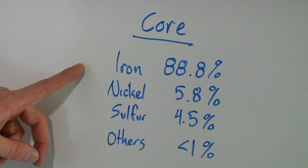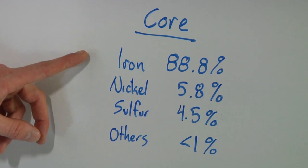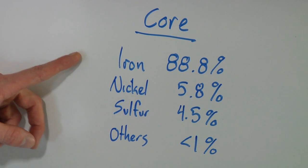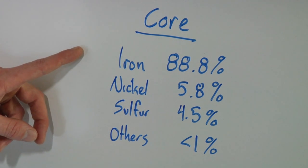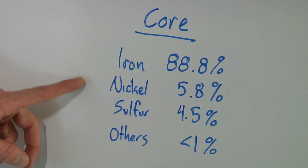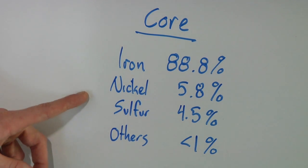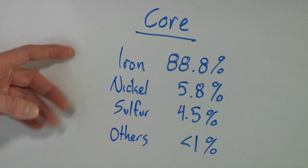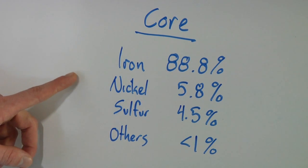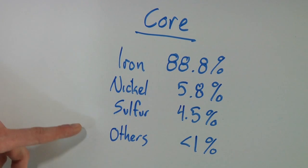The core is made up of mainly three elements. The core is 88.8% iron, so it's almost all iron. It's pretty heavy. And there's an additional 5.8% of nickel and 4.5% of sulfur. So these all combined make up roughly 99% of the Earth's core. You have a couple of other elements that exist there, but they're in percentages of less than 1%.